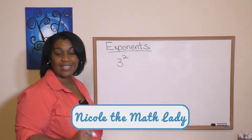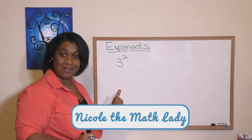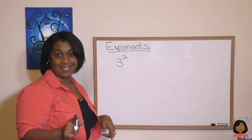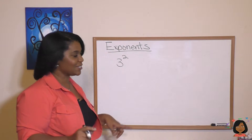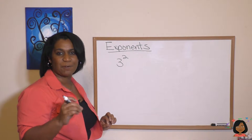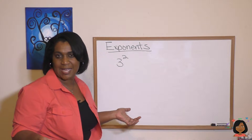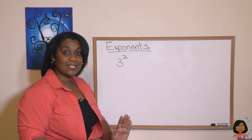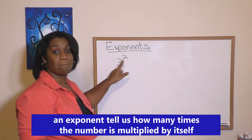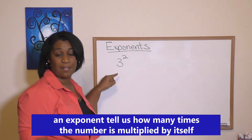Hi, it's Nicole the Math Lady. Today we're talking about exponents. You might remember that exponents is essentially this little number that's in the upper right hand corner. And what does it tell us? It tells us how many times we should multiply this number by itself.